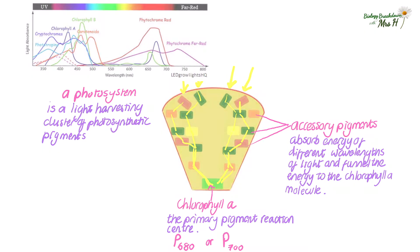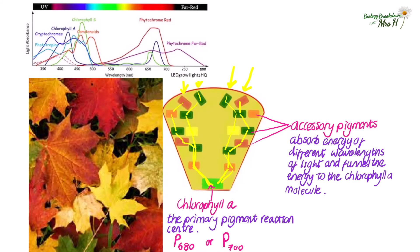And in the autumn when the chlorophyll breaks down we see the other pigments that are there all the time in the leaves but are usually just masked by this chlorophyll.